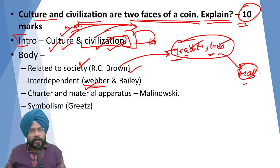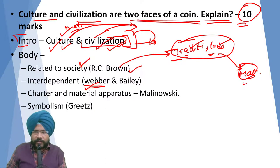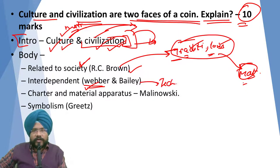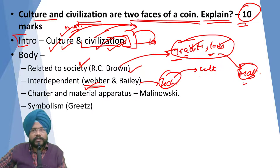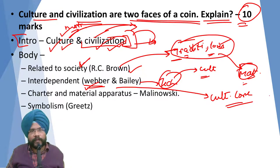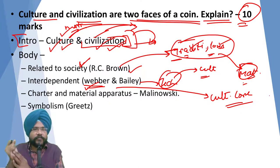But on the other hand, Baeley proved through fieldwork in South India that in the wake of globalization, your civilization can also affect your culture. Because of globalization, technology creates an impact, and this technology has affected culture. Similarly, you can give the example of cultural core — as your technology changes, your social organization and family structure begin to change, so civilization has cast an effect upon culture.